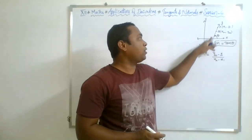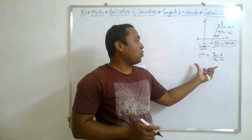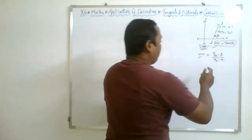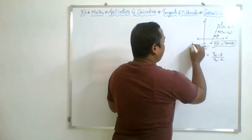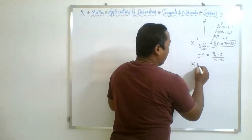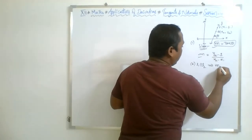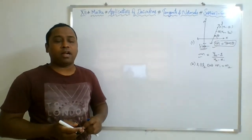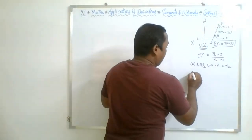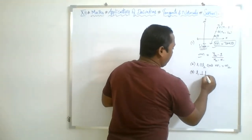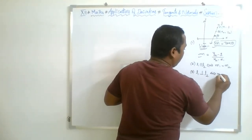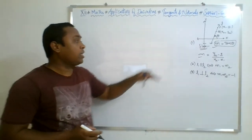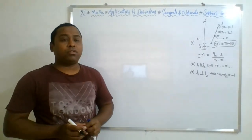Either you know the angle made by the line with the x-axis in the positive direction, or a line is passing through two known points. With the help of the slope concept, we also studied that if two lines are parallel, their slopes are equal, and vice versa. And if lines are perpendicular, the product of their slopes m1 into m2 is equal to minus 1.